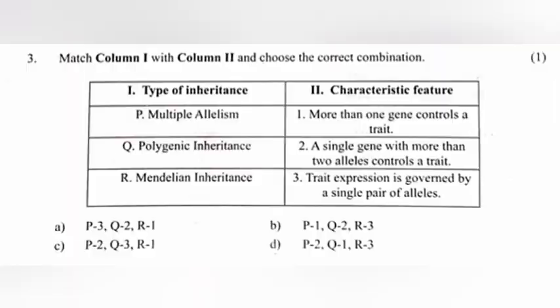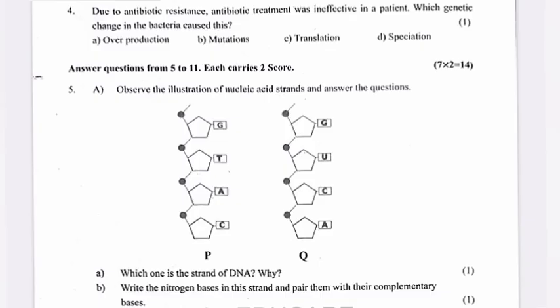Question 3: Match column 1 with column 2 and choose the correct combination. Question 4: Due to antibiotic resistance, antibiotic treatment was ineffective in a patient. Which genetic change in the bacteria caused this?